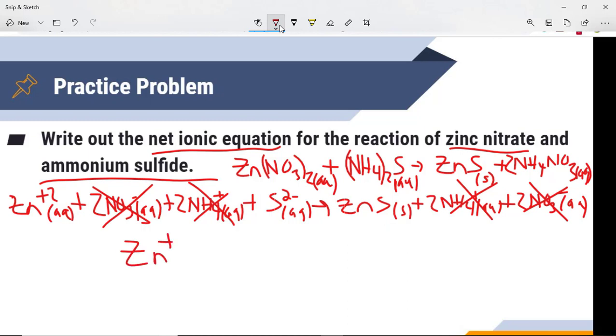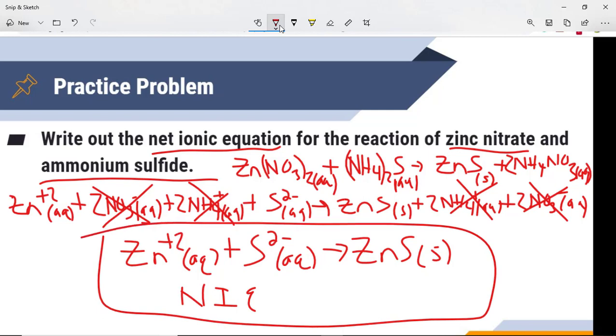So Zn2+ aqueous plus S2- also aqueous yields zinc sulfide, which is a solid. And there's my net ionic equation right there.